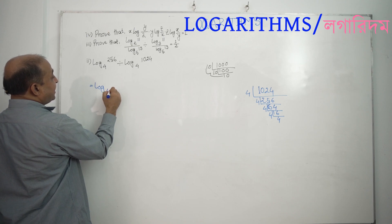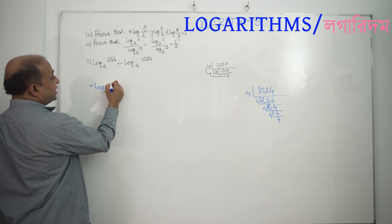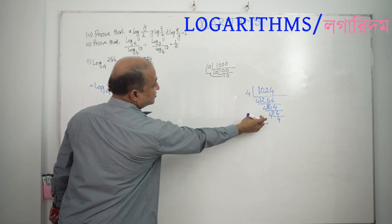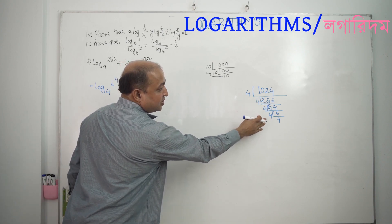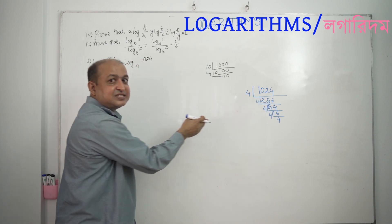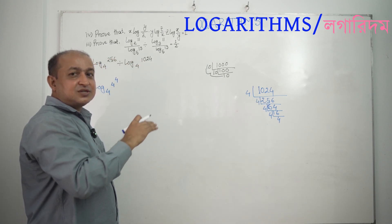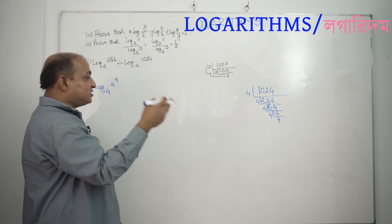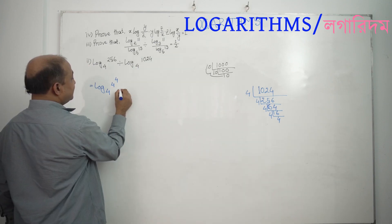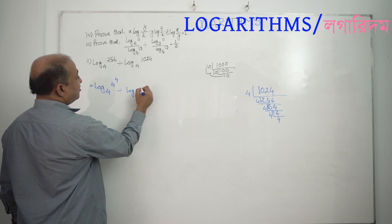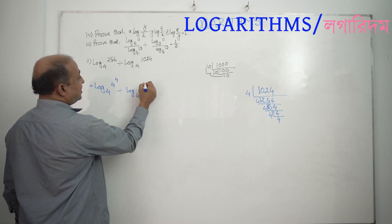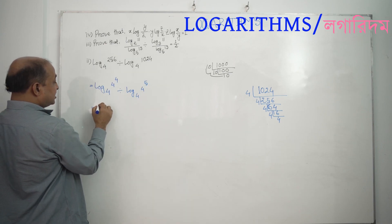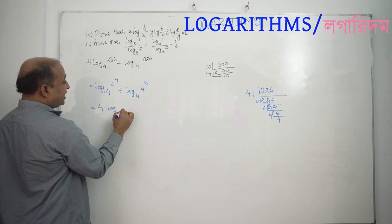We say log base 4 of arguments: 4 to the power 4, giving 266. Divided by log base 4 of 4 to the power 5.